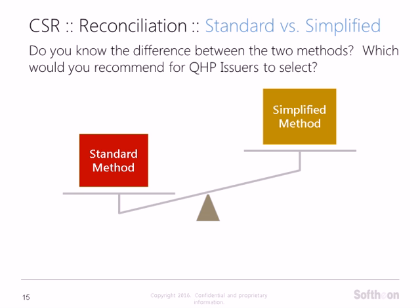That's great news that standard method is the more favored — we actually predicted that would be the case. The simplified method will be disappearing after this year, though that is still pending. What makes the standard method so challenging? It is the re-adjudication of claims. A lot of systems are not built to re-adjudicate claims as dummy claims. CMS released an initial report showing that the standard method is actually the cheaper version and more accurate — it helps both the QHP issuer and CMS do the reconciliation. So it is more of a long-term investment, and that is why the standard method is going forward.